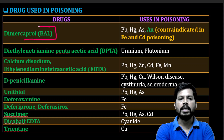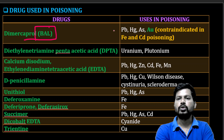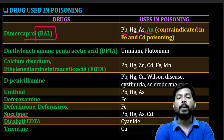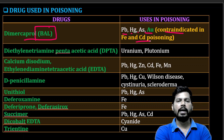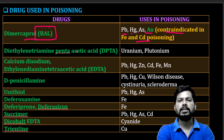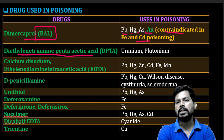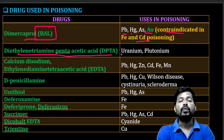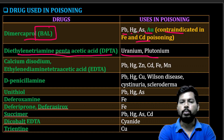Dimercaprol, also known as BAL (British Anti-Lewisite), is an antidote for poisoning by lead, mercury, arsenic, gold, and bismuth. It is not used in cases of iron or cadmium poisoning. DTPA (diethylene triamine pentaacetic acid) is used as an antidote for uranium and plutonium poisoning.